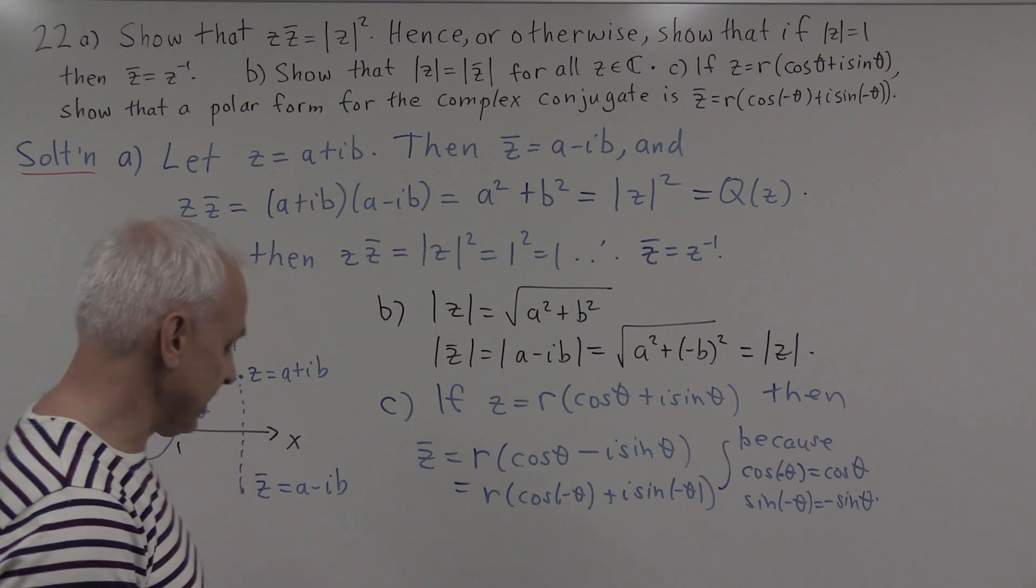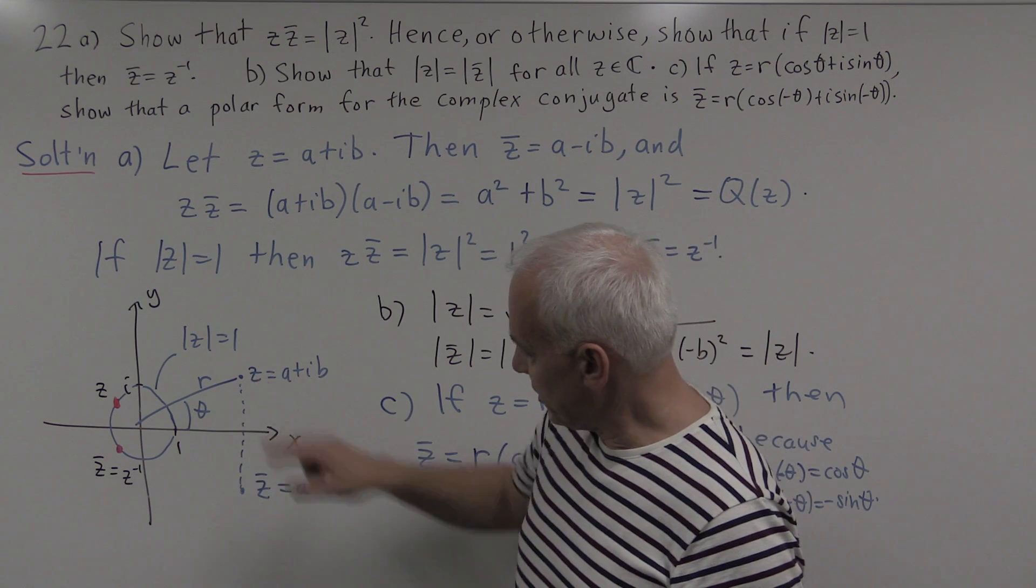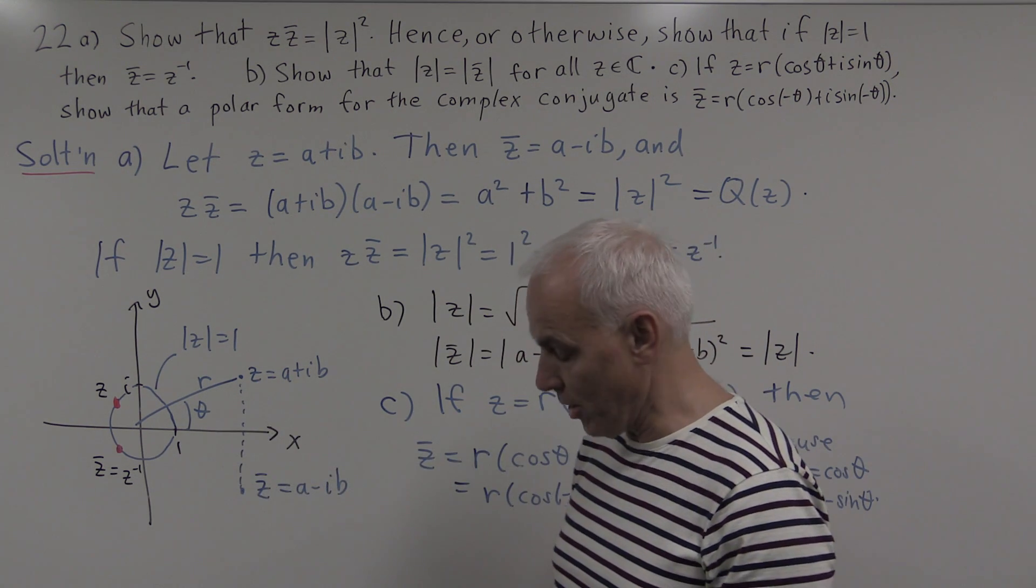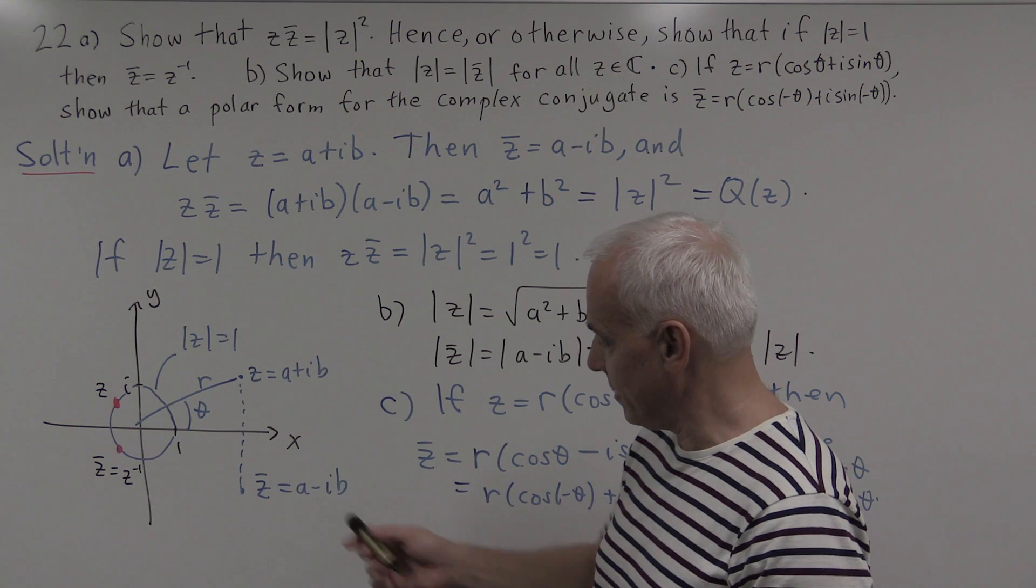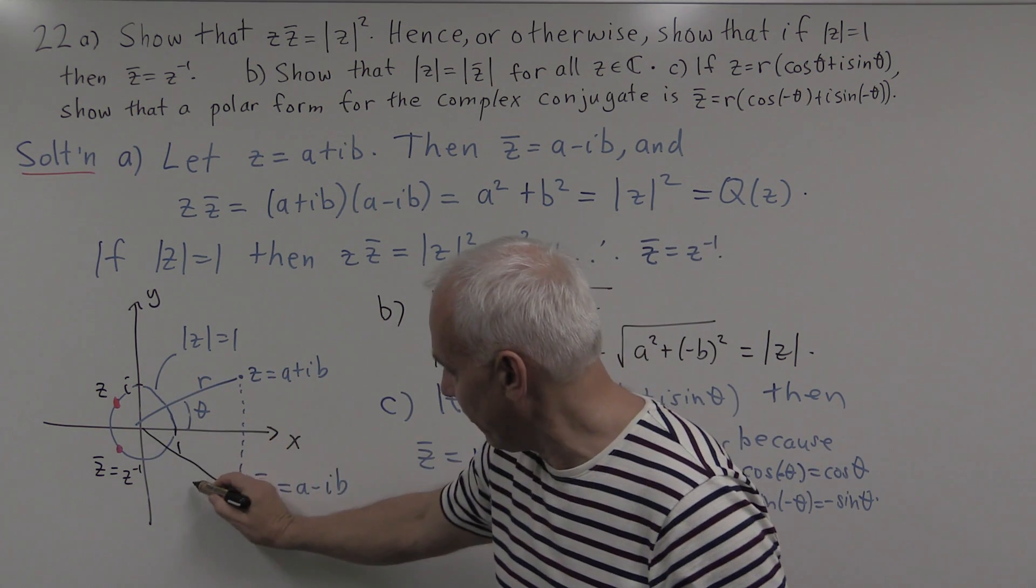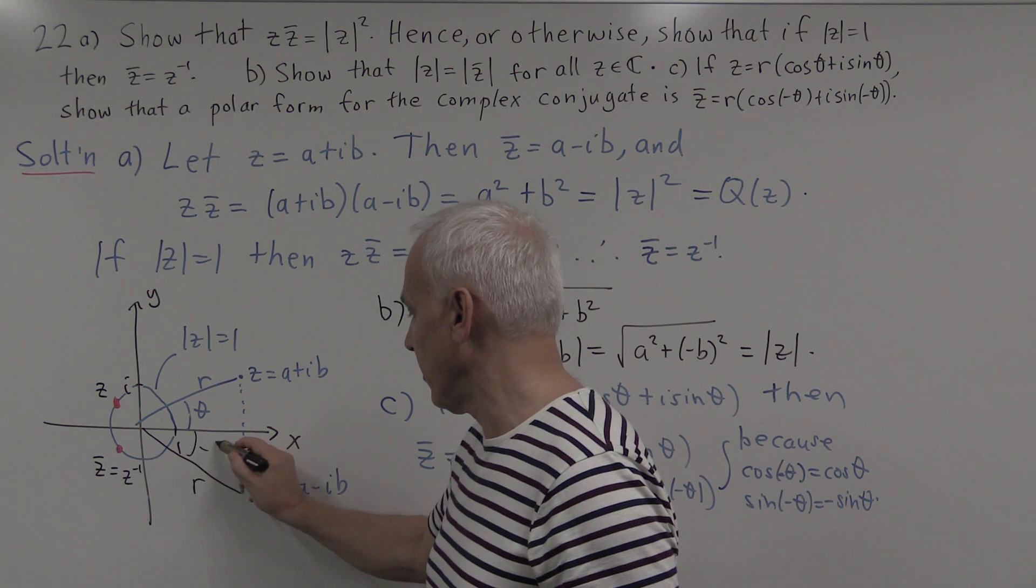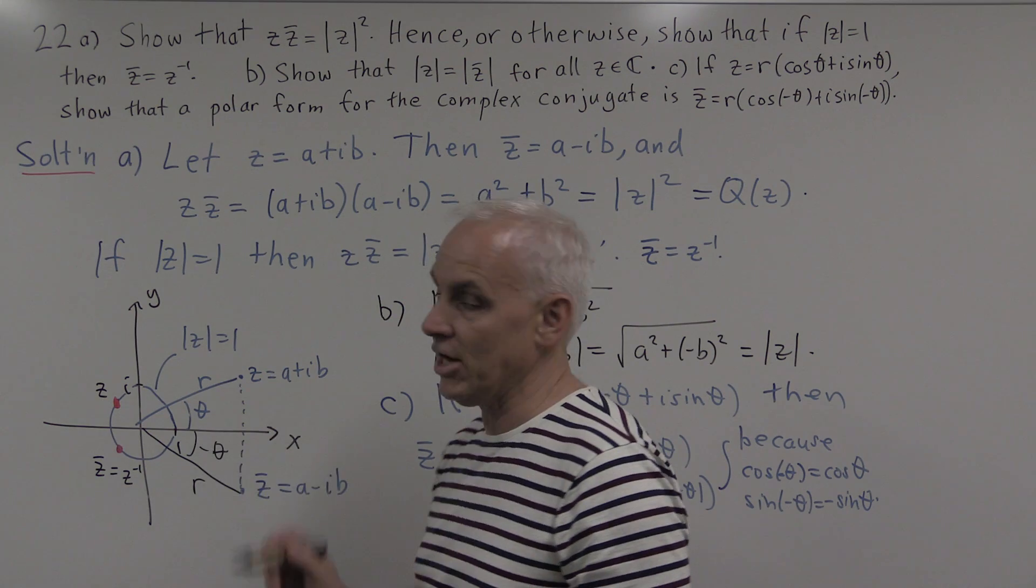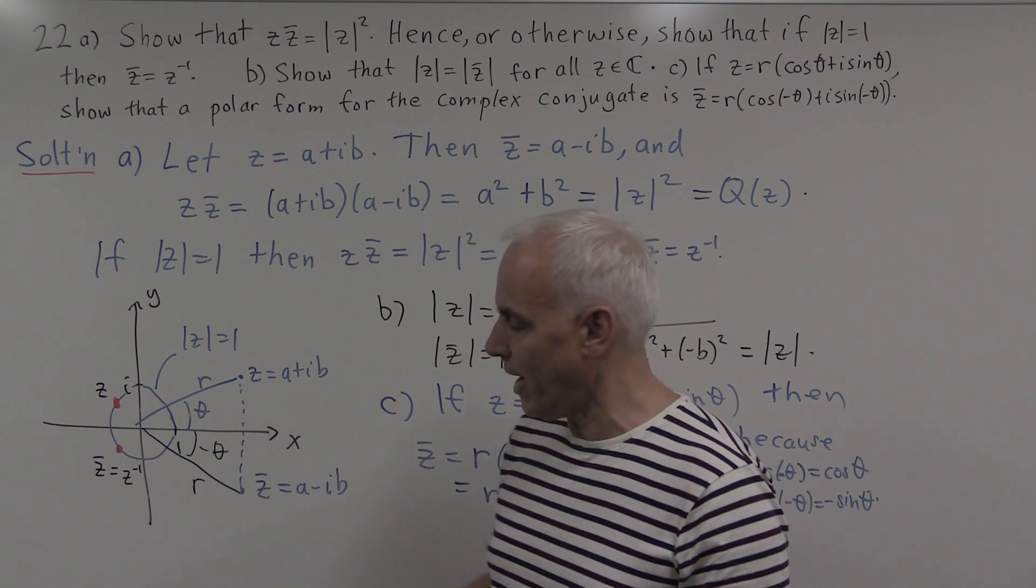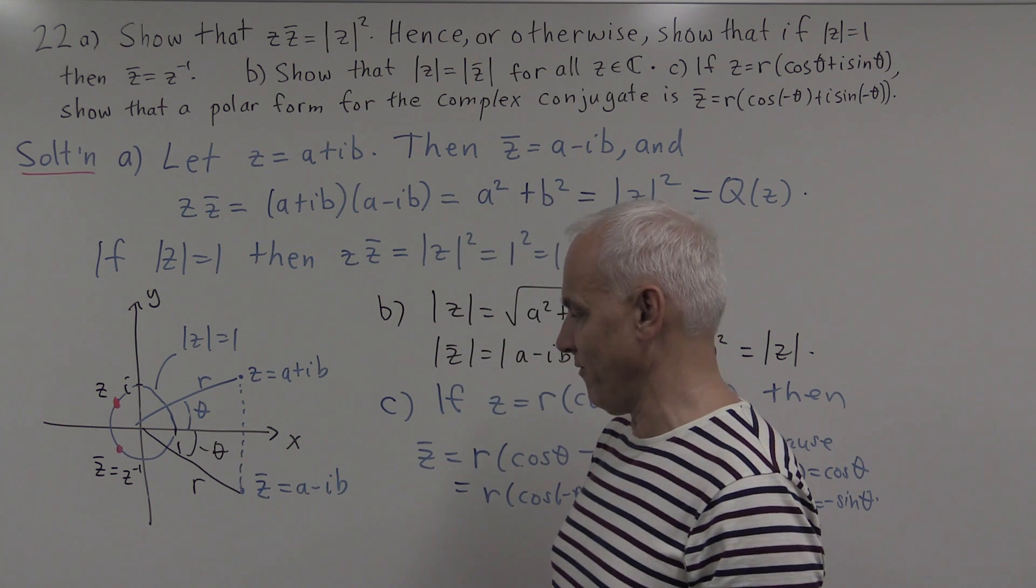And geometrically, what this is telling us is, in terms of the picture here, if there's the complex number z and there's its angle or argument θ, then the complex conjugate over here, down here, will have the same r, but the angle now is the negation of the previous one. So instead of going up by a certain number of degrees, we're going down by the same number of degrees.